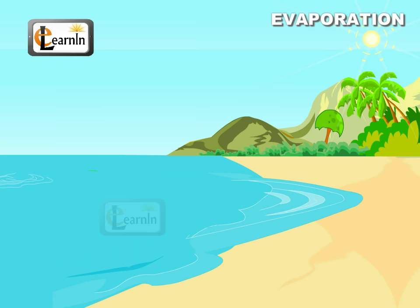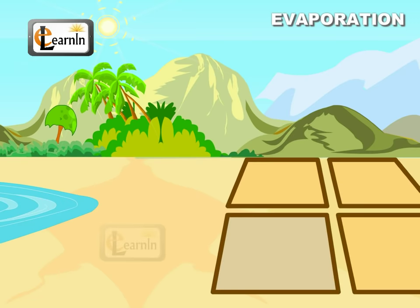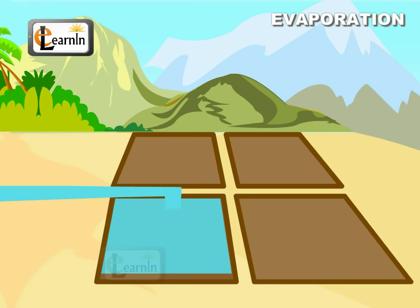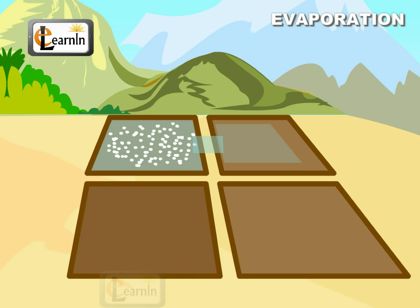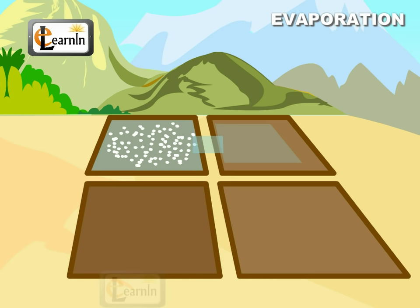Sea water contains salt mixed in it. Common salt is one amongst them. When sea water is allowed to stand in shallow pits, water gets heated by sunlight and slowly turns into water vapor through evaporation. In a few days, leaving the salts behind, water evaporates completely. Common salt is then obtained from this mixture of salts by further purification.